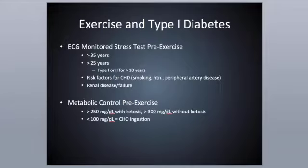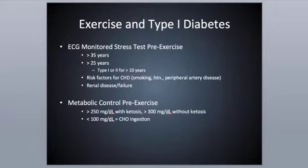For pre-exercise blood glucose control: greater than 250 mg/dL with ketosis, or greater than 300 mg/dL, means you need exogenous insulin to try to decrease those levels. Less than 100 mg/dL means you need to ingest some type of carbohydrates beforehand. These numbers — 250 and 300 — are high, so insulin or carbohydrates need to be adjusted accordingly.